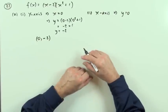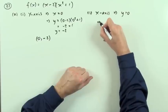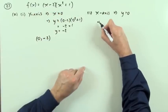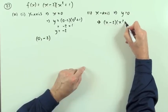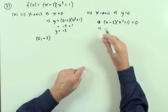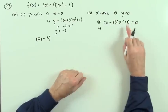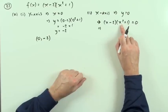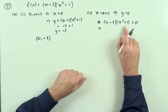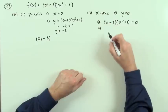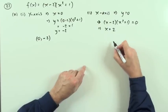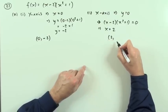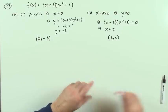Where does it cut the x-axis? You're on the x-axis if y is zero — if there's no height. So this expression: x minus two times x squared plus one has to equal zero. Either factor could be zero, but x squared plus one can never be zero — the lowest value for that bracket is one. So it can only be x minus two equals zero, meaning x equals two.